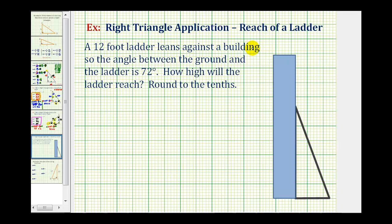A 12-foot ladder leans against a building, so the angle between the ground and the ladder is 72 degrees. How high will the ladder reach?